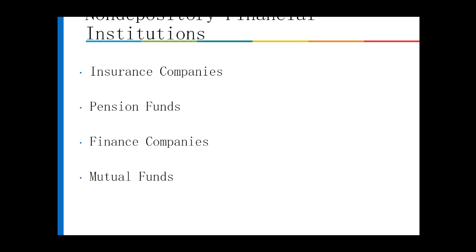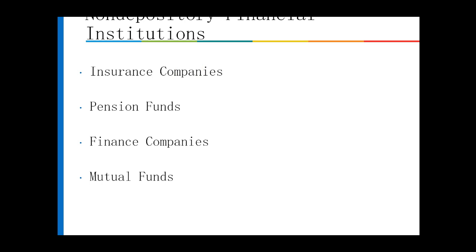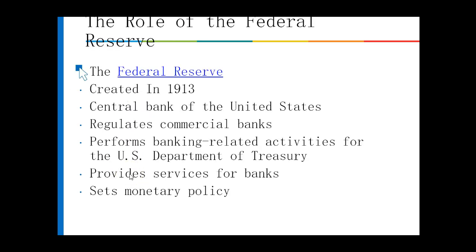Non-depository financial institutions — insurance companies are definitely financial institutions, but you can't go in there and make a deposit or withdraw cash. They are not depository. Pension funds, finance companies, and mutual funds work at the institutional level, buying on behalf of plans like 401ks. Insurance companies — like Nationwide, for example — receive deposits from individuals buying insurance policies, and when a person dies or a catastrophic event occurs, they pay out. These are not companies where you can make deposits and withdraw daily, but they are institutions that need to be noted in the financial institution role.